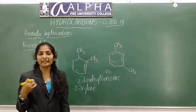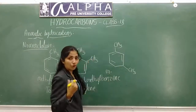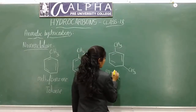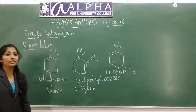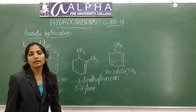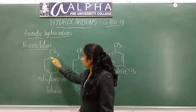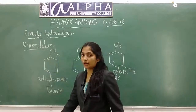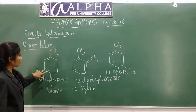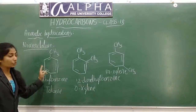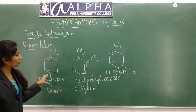We write just the short form: ortho, meta, or para. This is how you name aromatic compounds — simple and easy. To recap: 1,2 and 1,6 are ortho positions; 1,3 and 1,5 are meta positions; and 1,4 is para position. This covers nomenclature.